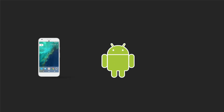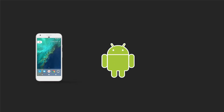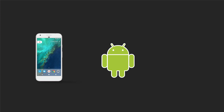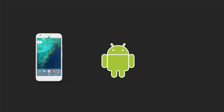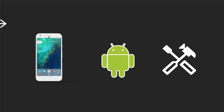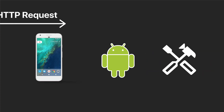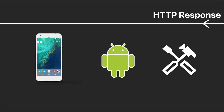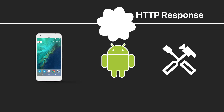If you are an Android developer, you might have come across times when you are building a new feature but the API you need isn't ready yet. Or maybe you need to test different scenarios with various API responses. In these cases, you need a tool that makes it easy to change or even replace HTTP responses for your app, like 4xx response code handling or any internal server error.